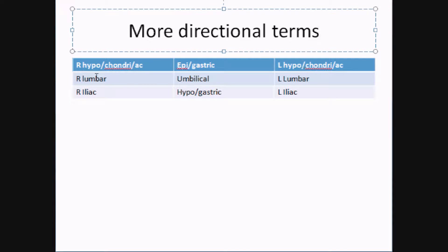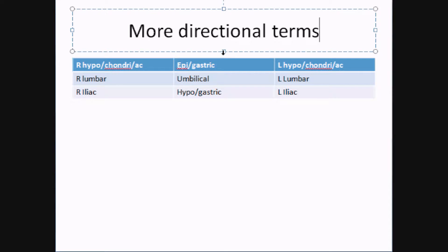Right below the ribs on the right is the right hypochondriac region; in the middle is the epigastric region, right above the stomach in the upper abdomen; and on the left is the left hypochondriac region. Moving down: right lumbar on the side, umbilical in the center — essentially your belly button area — and left lumbar. The right iliac is just above the hip bone.